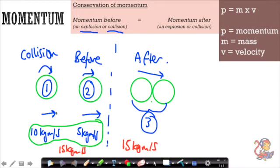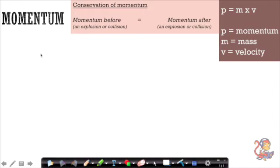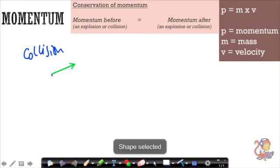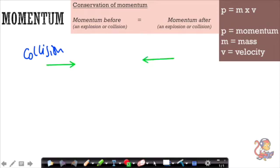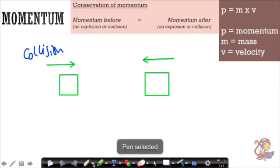It's really important to know the direction in which the balls are going. You could also have two objects travelling in opposite directions that collide and travel off together. In that case, you need to assign direction to your momentum values — one direction is positive and the opposite direction is negative.